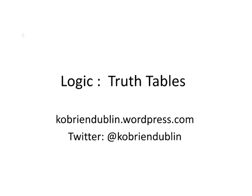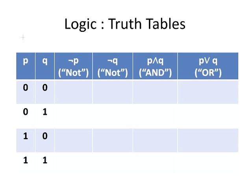In this presentation, we're going to look at working with truth tables for logic. Here are some truth tables. We have 0 and 1, combinations of 0 and 1 for P and Q. 0 represents false, 1 represents true, and we have 4 combinations of true and false for P and Q. The first column we're going to look at is not P.